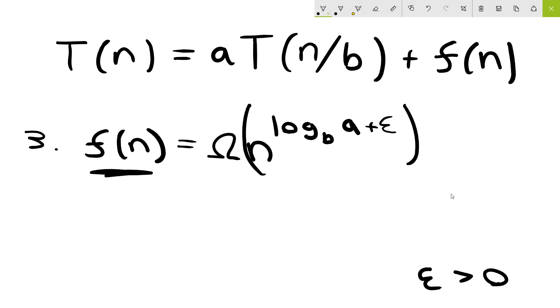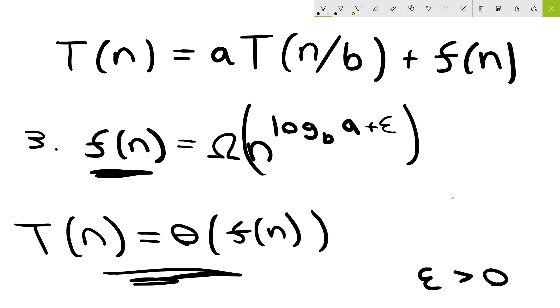In this case, the f of n term here is the dominant term. So our asymptotic runtime is going to be bounded and controlled by that dominant term. So it's going to be theta of f of n. So this is our runtime for case number three.